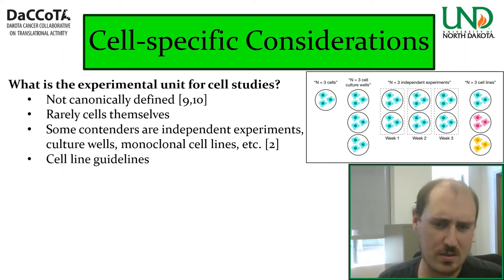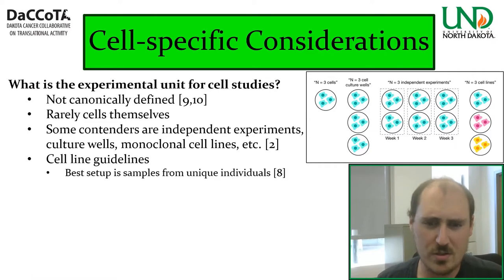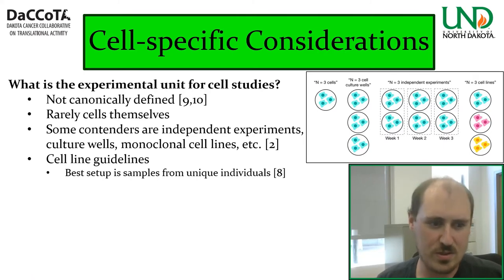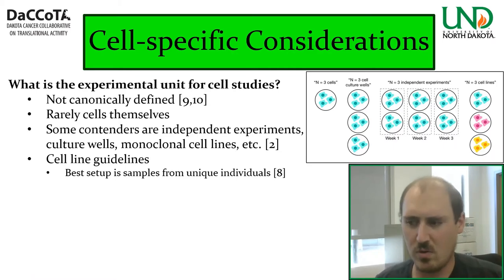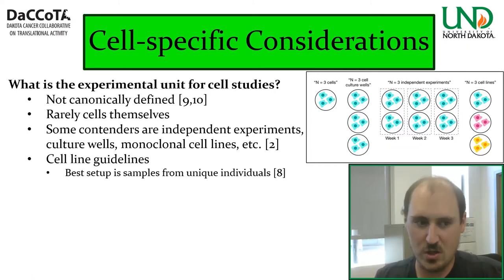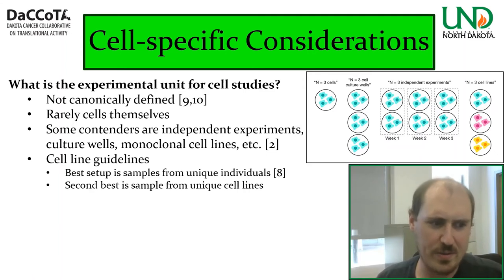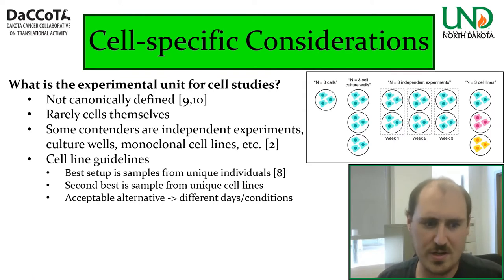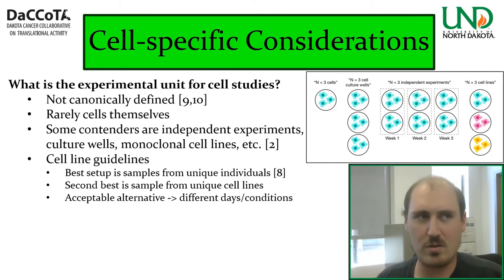Here are my cell line guidelines. The best setup for an experimental unit is samples from unique individuals — tumor samples from a bunch of different patients, cultured up — which best captures a true population. The second best is samples from unique cell lines; cell lines have less variation, but different cell lines should still be enough. An acceptable alternative is fewer samples with different days and conditions, because often you can't get three or more cell lines, but you can still include variation for robustness by doing it across different times and conditions.